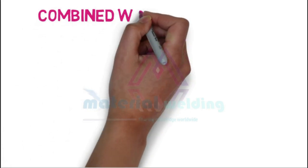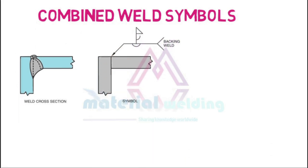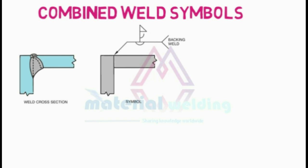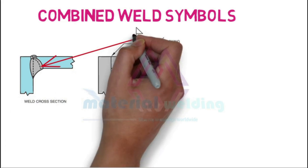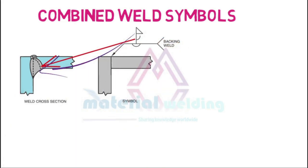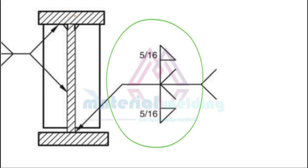Let us learn combined weld symbols. Combined weld symbols are used for joints requiring more than one weld type, and a weld symbol is used for each type of weld. In the first example, a corner joint with a single bevel or HY weld is welded with an additional fillet weld on the other side and a backing run welded on the arrow side. In the second picture, a symmetrical weld of a single bevel T-joint with additional fillet weld is welded on both sides of the welding joint.